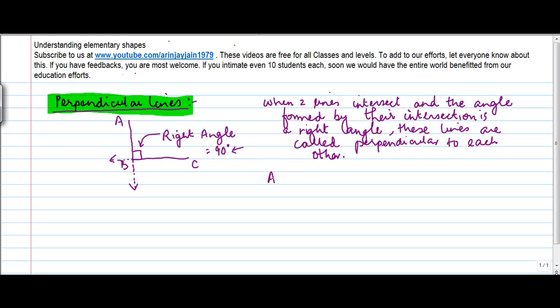And when two lines are perpendicular to each other, we write AB, which is this line, let's say A, B. BC is this line. We say AB is perpendicular to BC and vice versa, at least in this case.